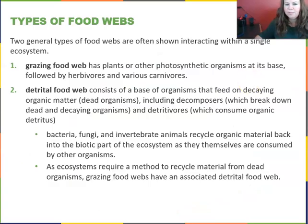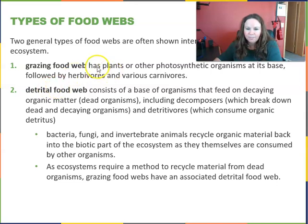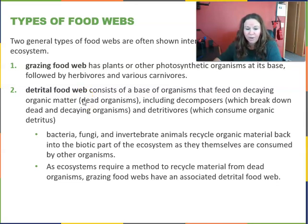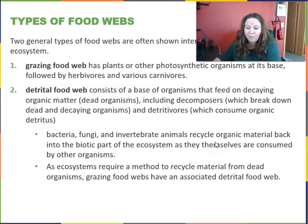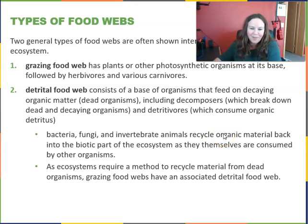There are two general types of food webs often shown interacting in a single ecosystem: a grazing food web, which has plants or other photosynthetic organisms at the base followed by herbivores and carnivores; and a detrital food web with detritivores — bacteria, fungi, and invertebrate animals — that consume organic detritus and recycle organic material back into the biotic part of the ecosystem. Grazing food webs also have an associated detrital food web, so everything basically goes back to our decomposers.